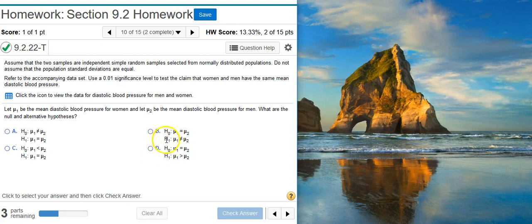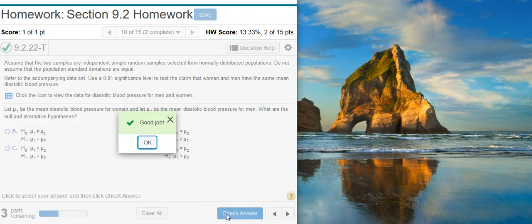The claim that we're testing here is that women and men have the same mean diastolic blood pressure. The claim is that the two are equal to each other, but equality by definition belongs to the null hypothesis. So therefore, we have to take the complement of the claim, and since the claim is that they're equal, the complement of being equal is being not equal to. So that means we're going to select answer option B. Good job!